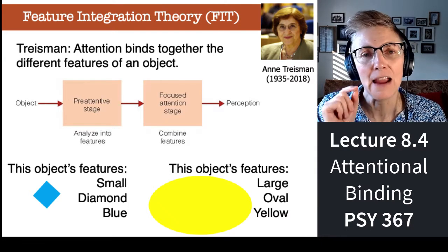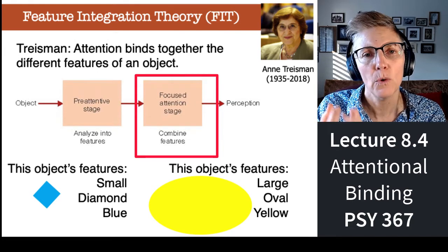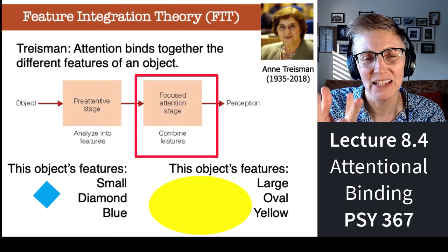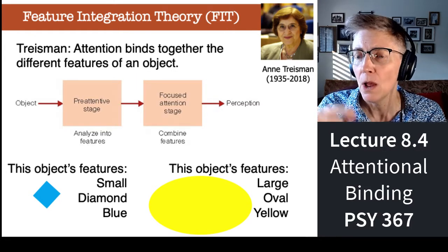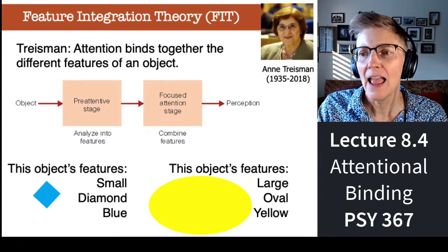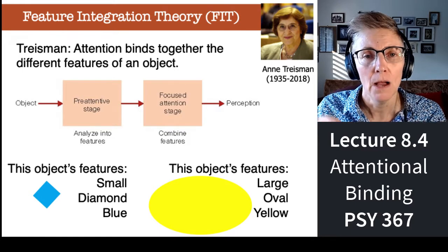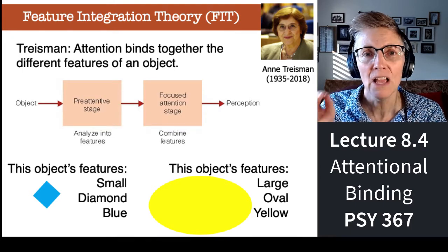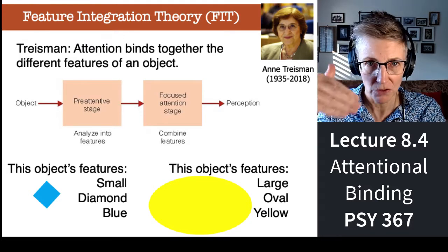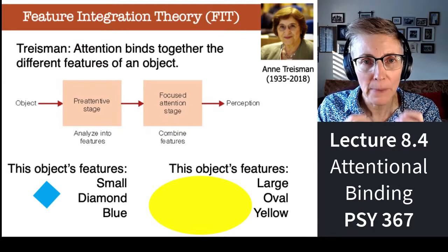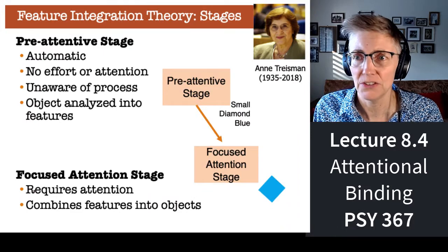But then she had a focused attention stage. In Anne's model, the idea was that what attention does is integrate the information across the different features. So my ability to see the shape on the bottom right as a large yellow oval requires attention. But according to Anne's model, seeing it as yellow or large or having a particular shape — those independent features did not. So the combination of the features is what attention does in her model.